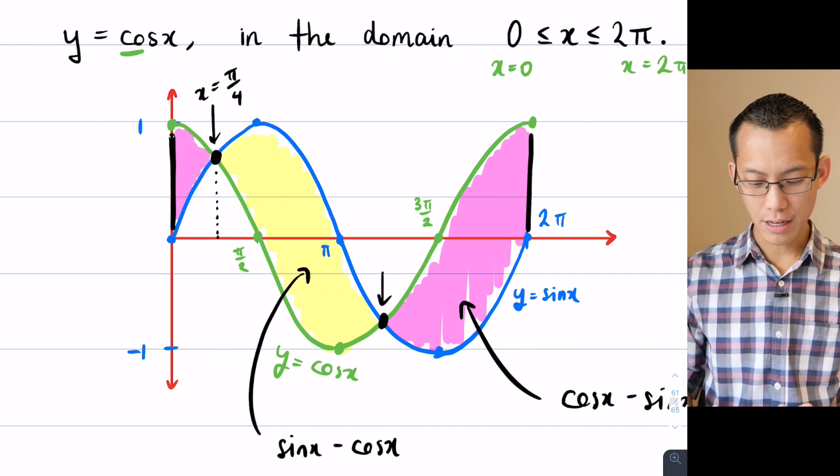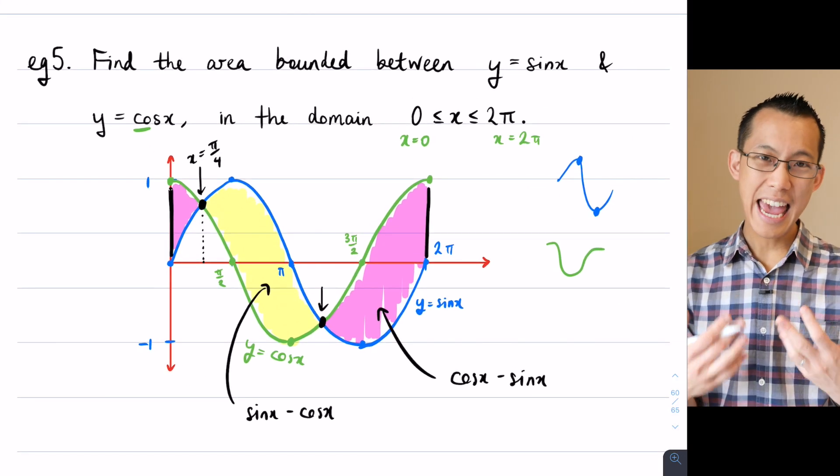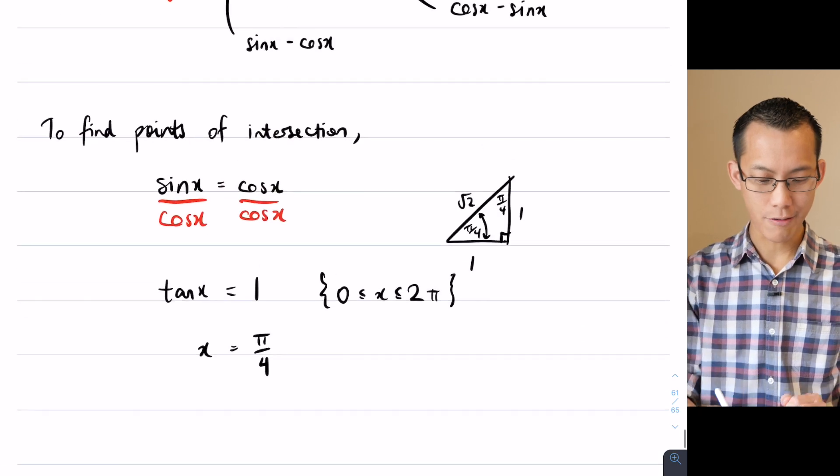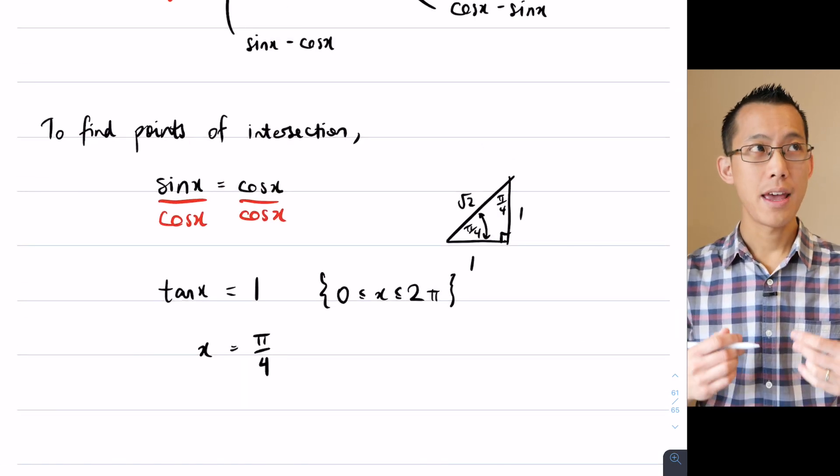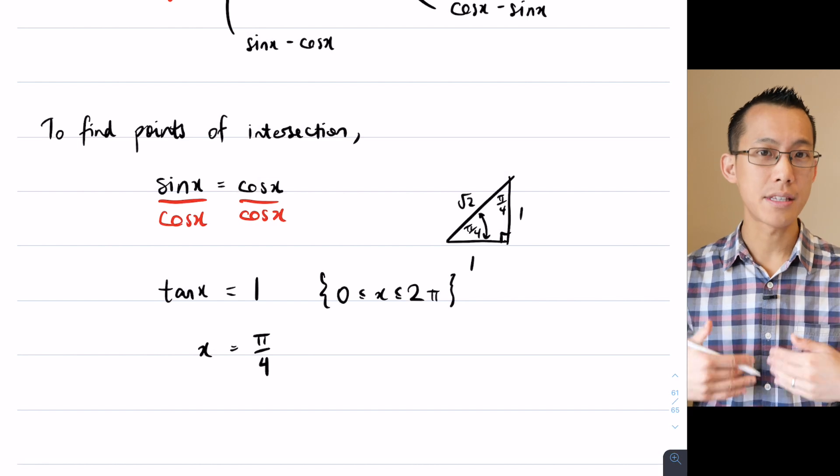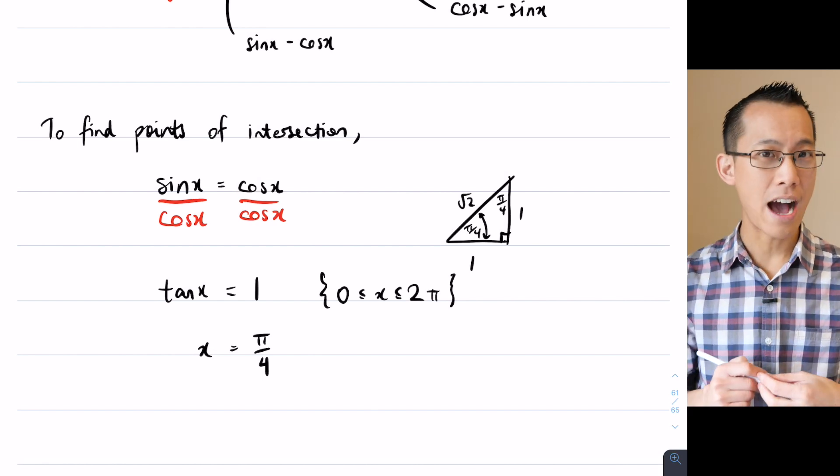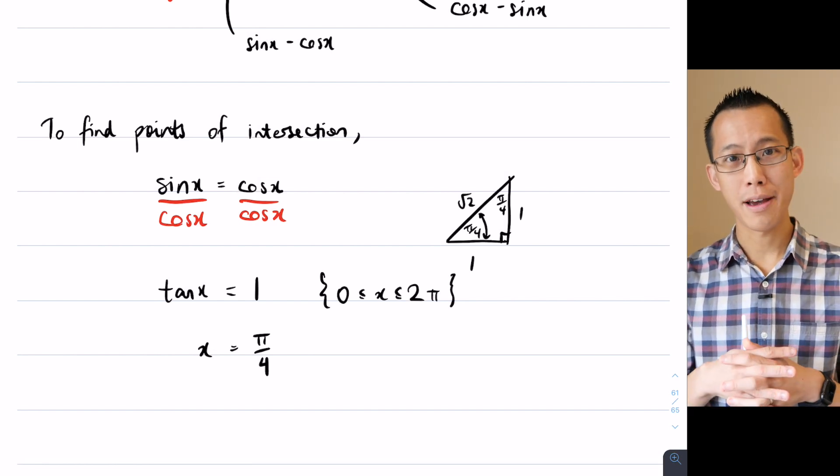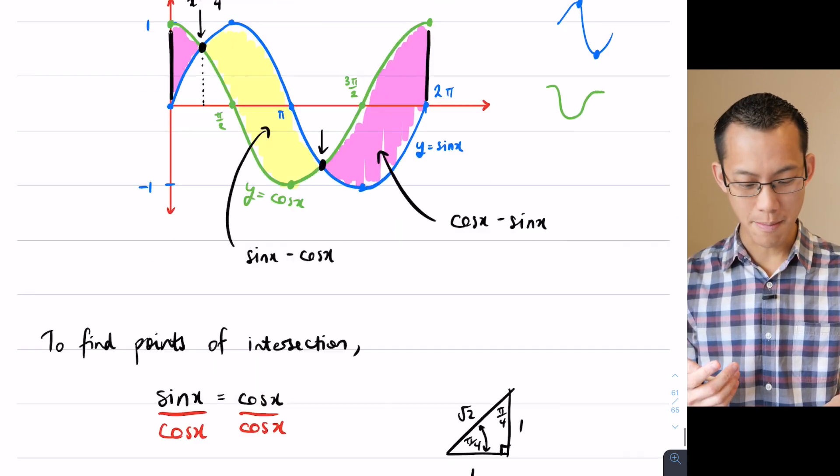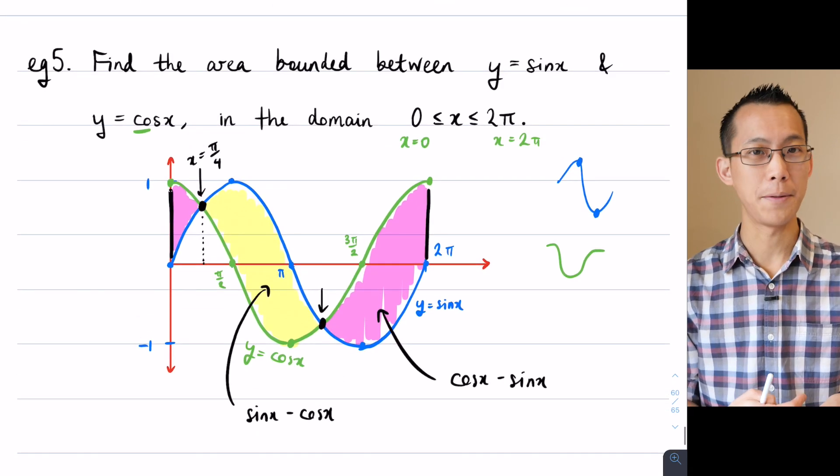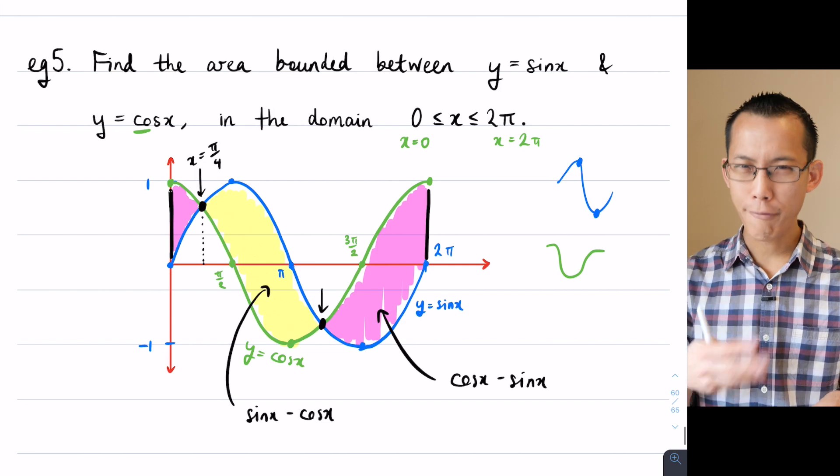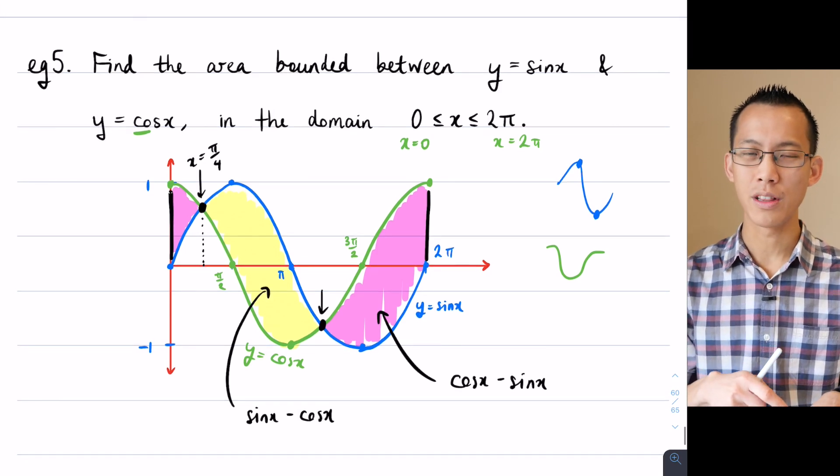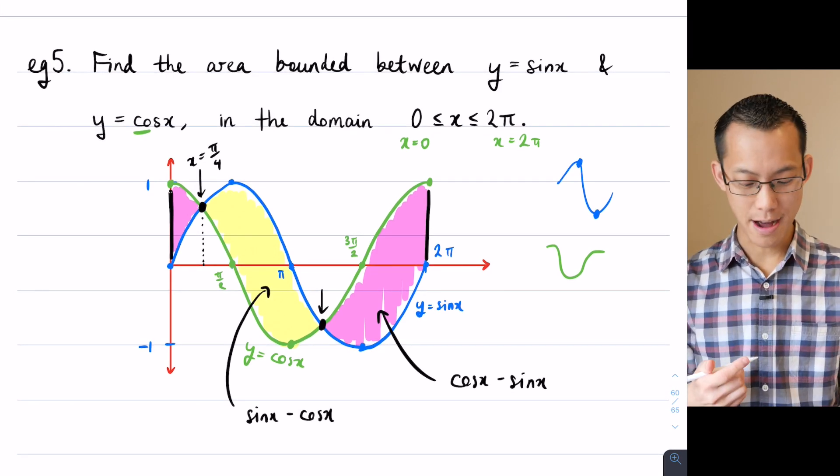Now my tip for you here is that you'll need to remember that tan x, which is what we're dealing with down here, like every other trigonometric function is periodic. It repeats. Now you have to think about how often it repeats. Sine and cosine repeat every 2π, but tan x repeats more frequently. Its period is only π.